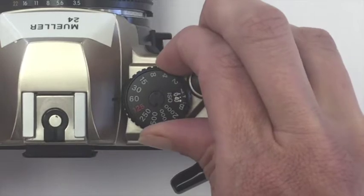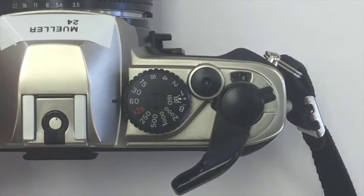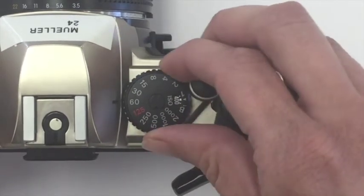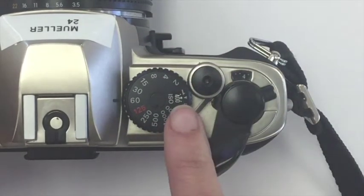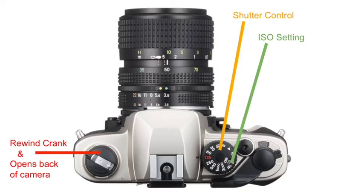Lifting and twisting allows you to change the ISO number. Remember, the film we use in class is ISO 400, so make sure the number in the window is always set to 400. Next to the shutter control dial, you will find a black button — this is the shutter release. When you push down on this button, the camera takes a photograph.